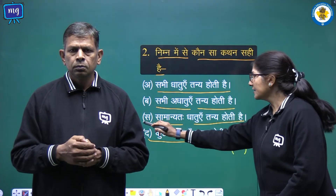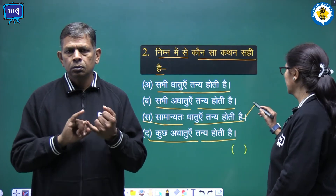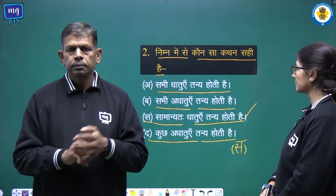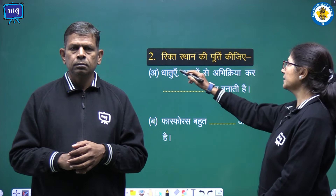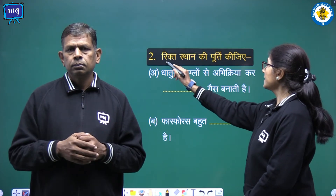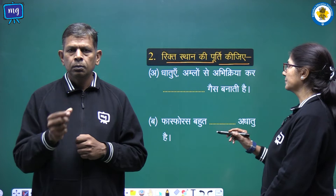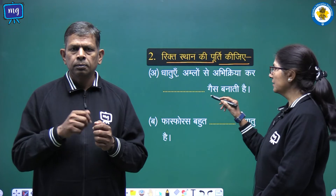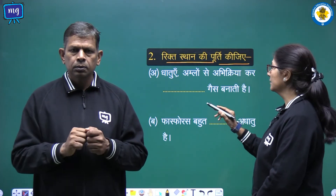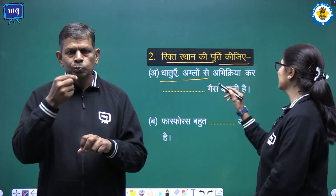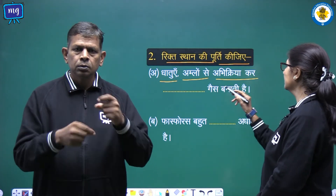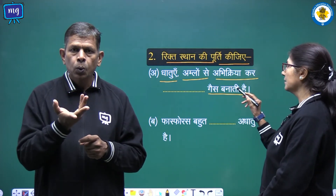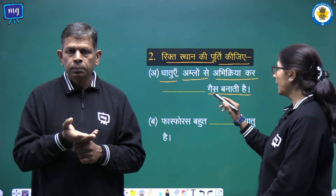So we will write in bracket. Question 2: fill in the blanks. Rictisthan ki poorti kijiye. Dhatuein amlon se abhikriya kar ke kaun si gas banati hain, bachon? Hydrogen gas banati hain.